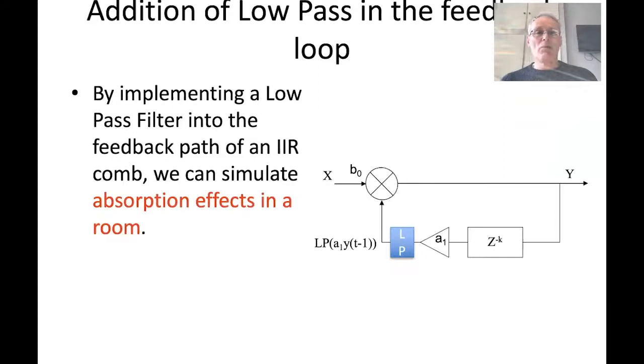The way we can do that is by combining it like this. This is the structure of the IIR comb where we've got the feedback, and this minus K is that delay term we saw earlier. We're going to insert a low-pass filter into this feedback network, and this is going to emulate the absorption characteristics of the room. We can have control both over the decay length of the filter and the absorption characteristics by modifying this filter.